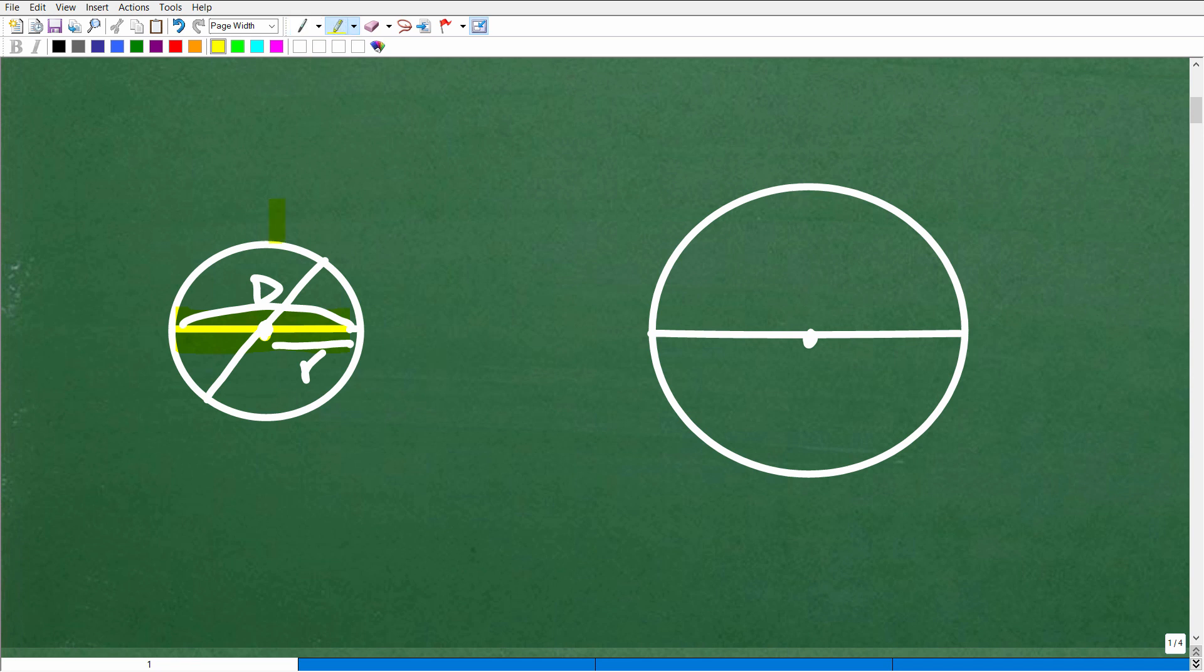Now, the distance around the circle is called the what? Well, it starts with a C. It's called the circumference. So if I just took it like a tape measure, if I could just swing it around and I went from here all the way around, I would have the circumference of the circle. Okay, so the circumference, again, is the distance around a circle. The diameter is the width of the circle.